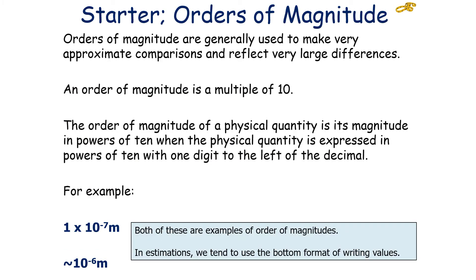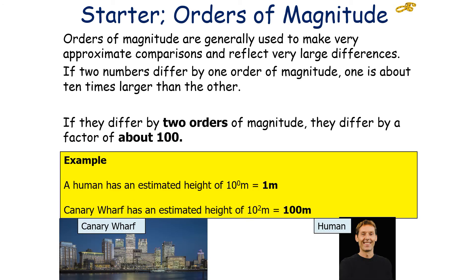Orders of magnitude are generally used to make approximate comparisons and reflect large differences. As we mentioned before, an order of magnitude is a multiple of 10. The orders of magnitude of a physical quantity is its magnitude in powers of 10 when the physical quantity is expressed in powers of 10 with one digit to the left of the decimal. You could have 1 times 10 to the minus 7 meters, or approximately 10 to the minus 6 meters. Both of these are examples of orders of magnitude, but in estimations we tend to use the bottom format for writing these values.